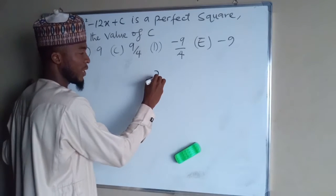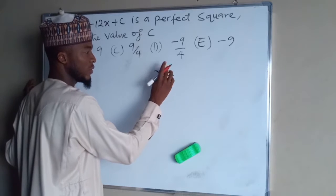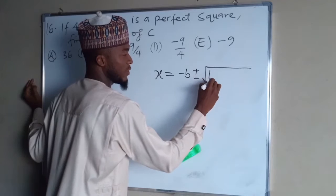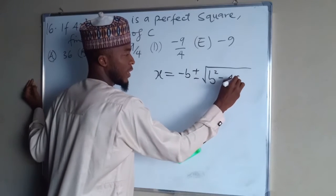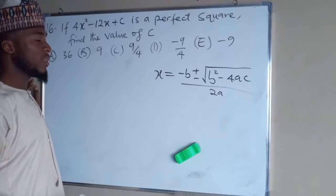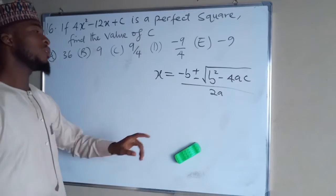If you can remember this formula, X equals minus B plus or minus square root of B squared minus 4AC divided by 2A. This formula is very, very important.